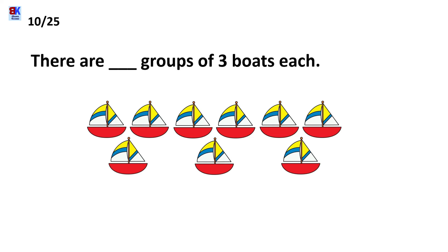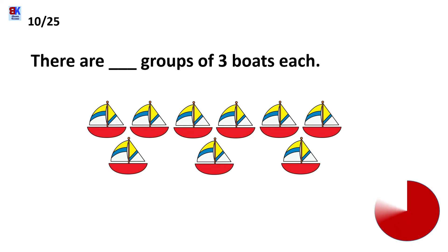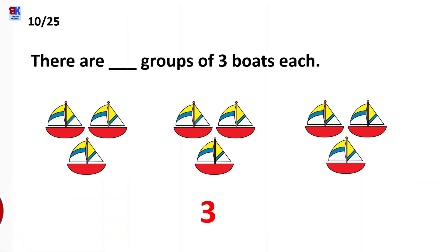Tenth question is: there are blank groups of 3 boats each. So the answer would be 3 groups of 3 boats each. This was a little tricky — could you get it correct?